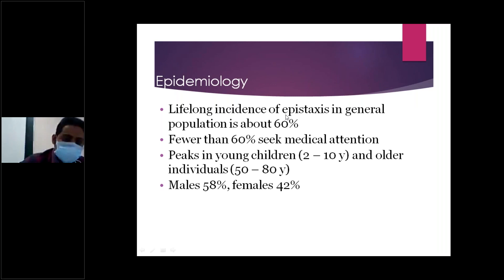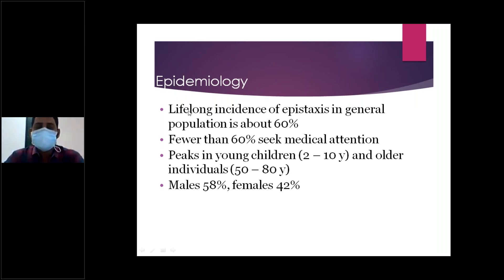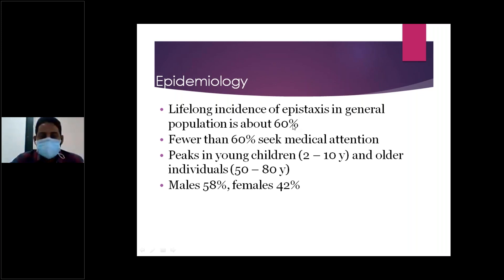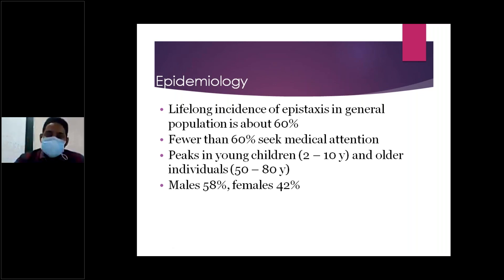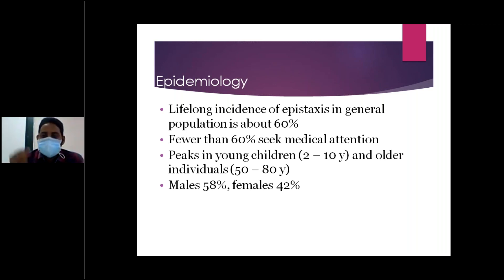Coming to the epidemiology of epistaxis: the lifelong incidence in the general population is 60%. This means if you take 100 people, 60 may get bleeding at any point in their lifetime, from birth to death. Either it may be a small drop or profuse bleeding — the incidence is 60%.